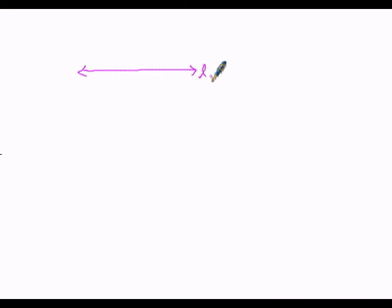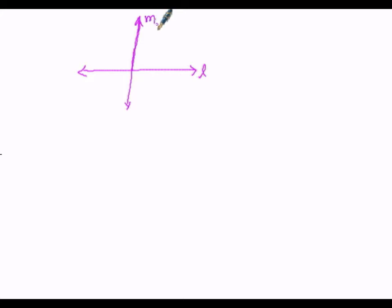Here, let us consider line L which is perpendicular to line M. This is the first case: L is perpendicular to M.